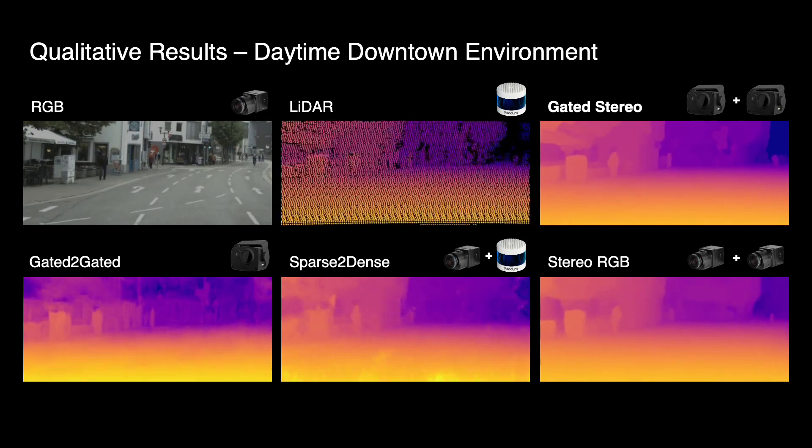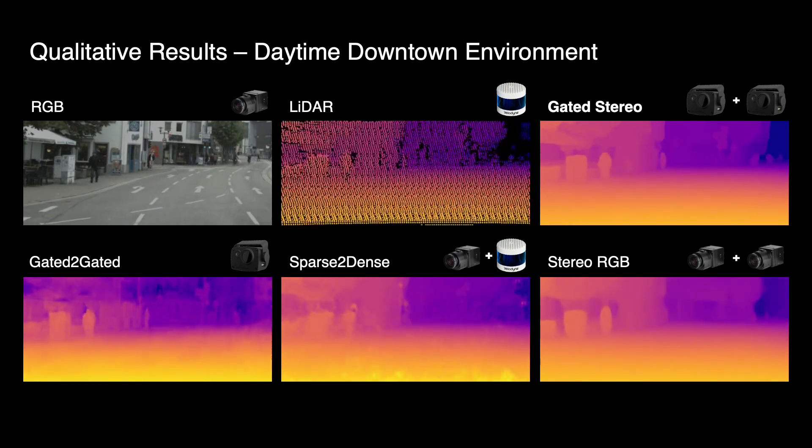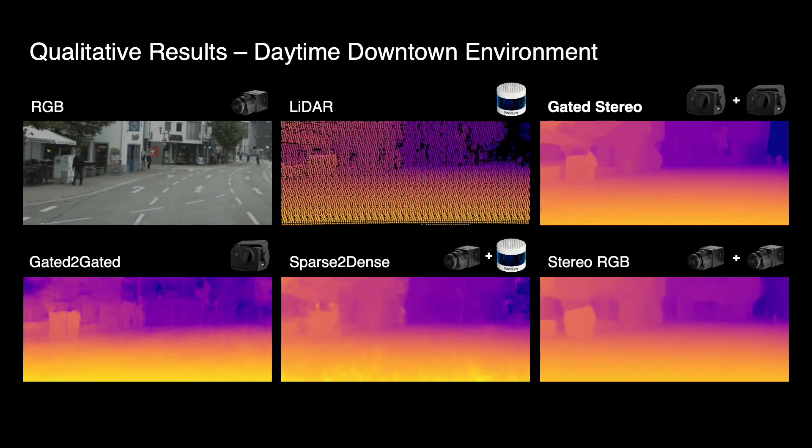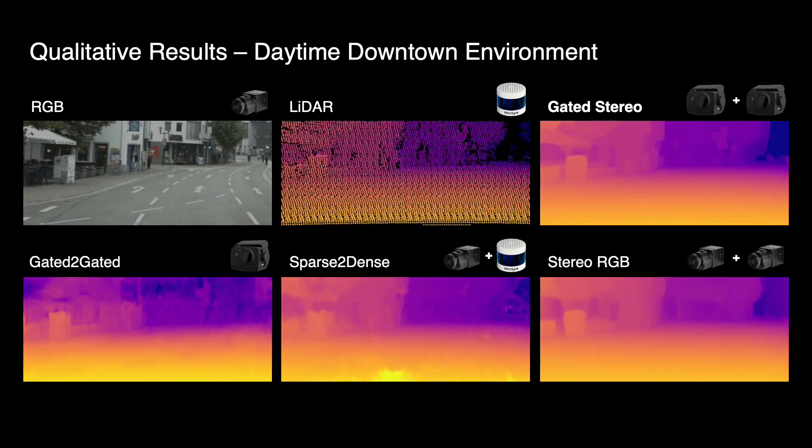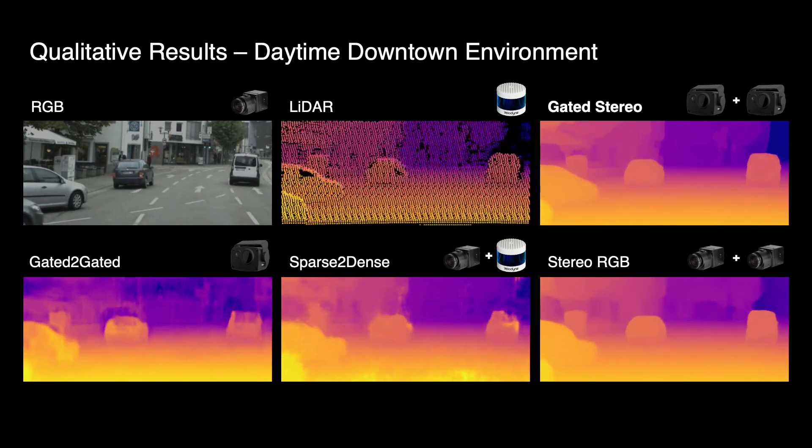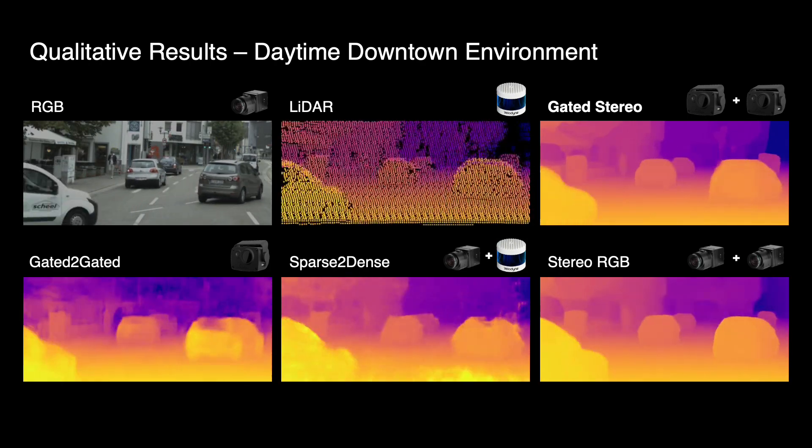This video demonstrates that our method is able to generate high-resolution depth maps with sharper object contours than state-of-the-art approaches. Gated stereo recovers accurate depth information of the bypassing cars as well as of the pedestrians in the background.